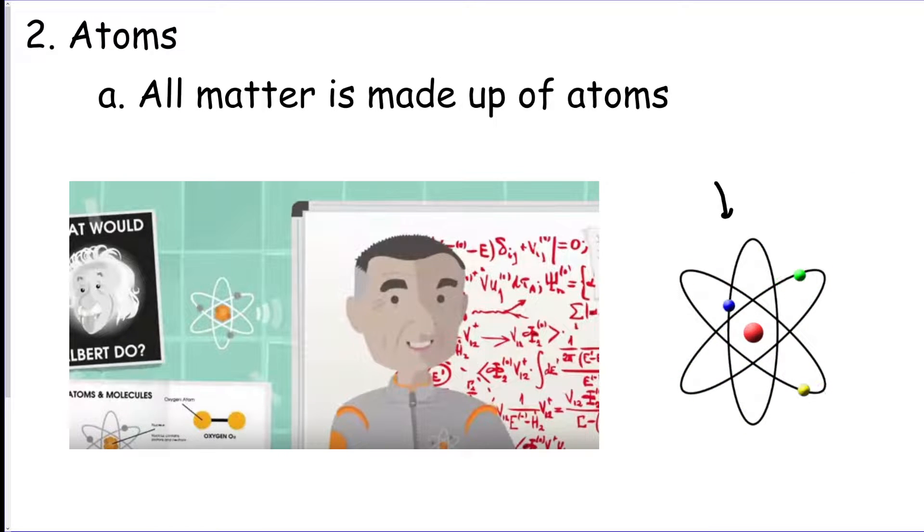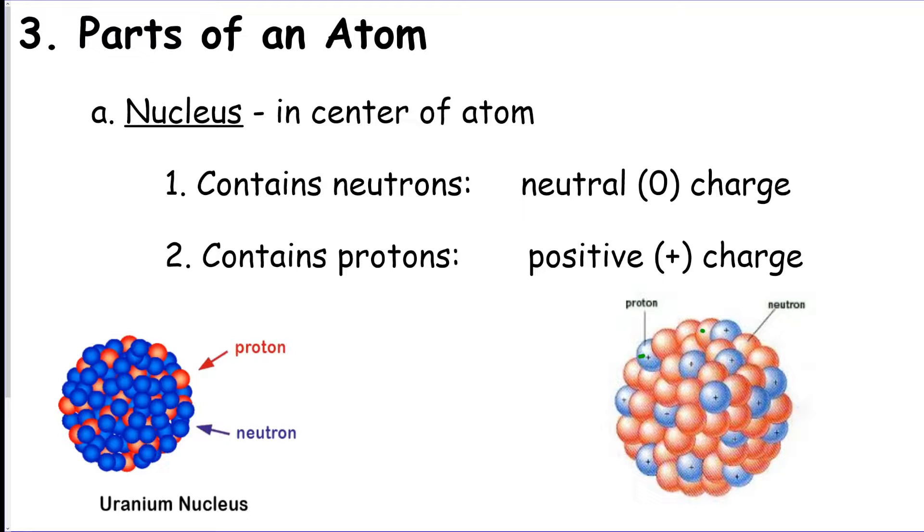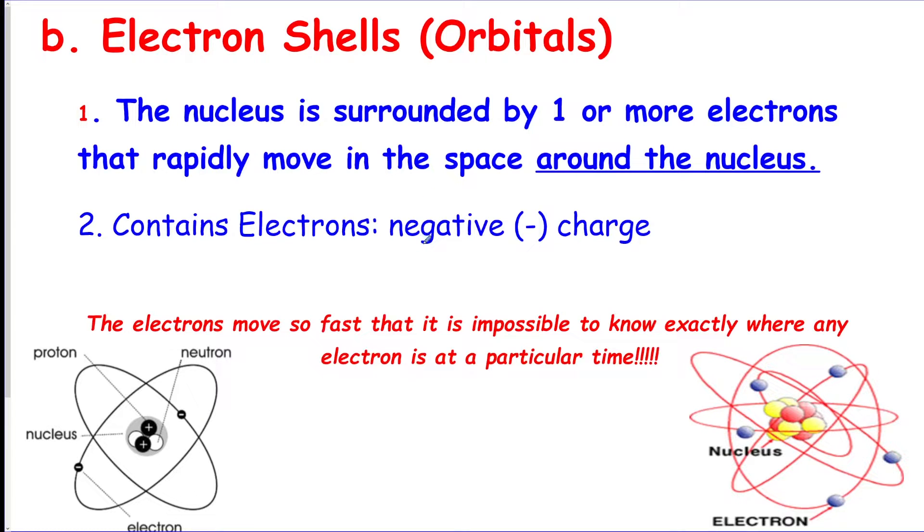There are three particles in an atom, and that's what we're going to learn about today. Inside the atom there's a nucleus which is in the center. This is going to contain our neutrons, which is the first particle, and the protons, which is the second particle. Neutrons have no electrical charge—zero. Protons have a positive electrical charge.